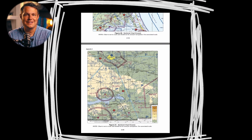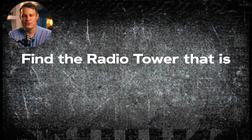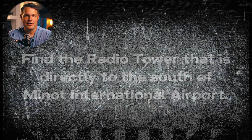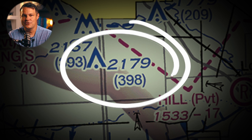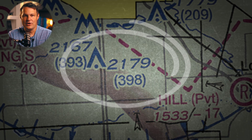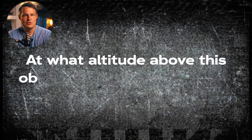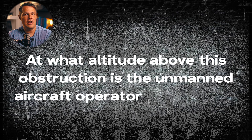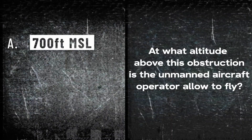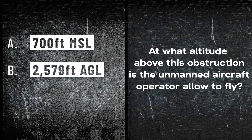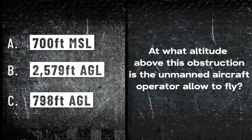Once we find that figure, the question says to find the radio tower along Interstate 83, which has a mean sea level altitude of 2,179 feet. The question asks: at what altitude above this obstruction is the unmanned aircraft operator allowed to fly? Answer choice A is 700 feet mean sea level. Answer choice B is 2,579 feet above ground level. Answer choice C is 798 feet above ground level.